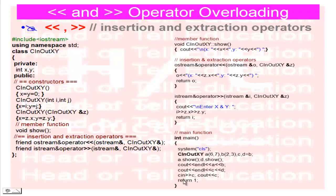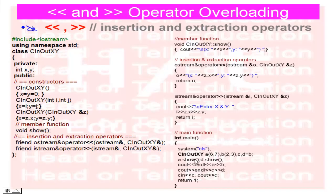Next, in the main function, I created objects of CInOutXY class: object a with default parameters 6, 7; object b with parameters 2, 3; object c with default value 0; and object d equal to b, using the copy constructor so b's value is assigned directly to d. I then call the member functions a.show() and d.show() to print values using the member function.